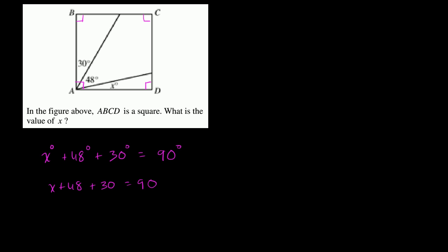And now we just have to solve for x. So what is 48 plus 30? Well, that is 78. So we get x plus 78 is equal to 90.